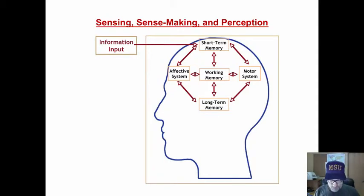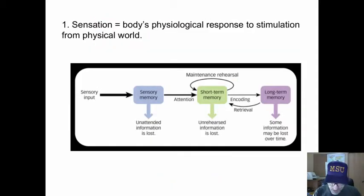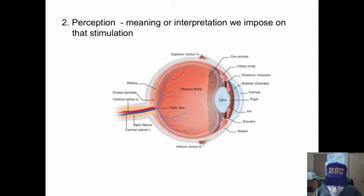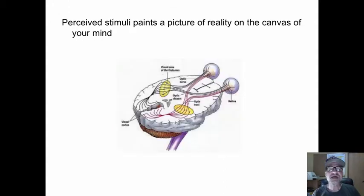Sensing, sense-making, and perception. Sensation is the body's physiological response to a stimuli from the physical world. Hits one of our sense receptors, like light hitting our eyeballs, the light waves. That is sensation. Perception is the meaning or interpretation we impose on the stimulation. The sensation is the light hitting our eyeballs. Perception, we recognize the shape as a tiger. The light rays hit our eyes, sends data to the brains, paints a picture of reality. And that is perception.